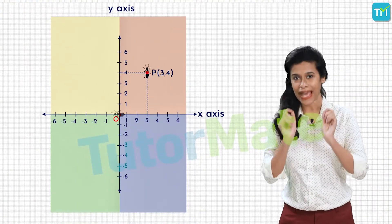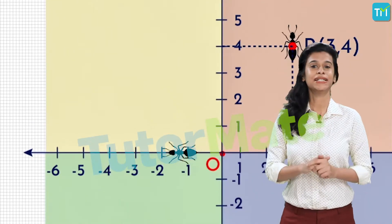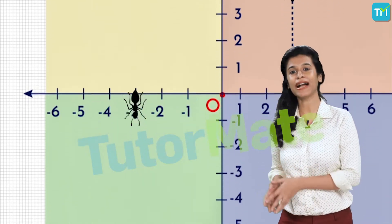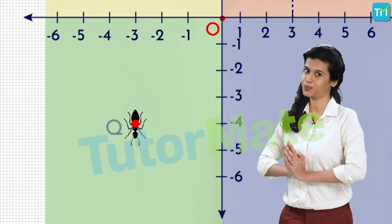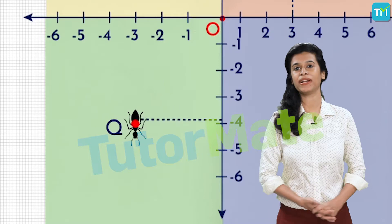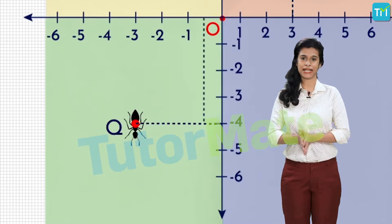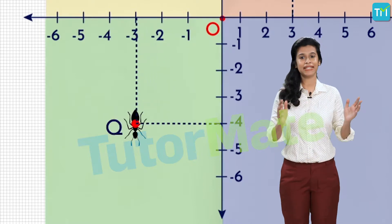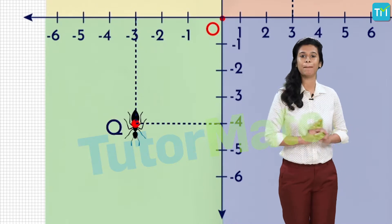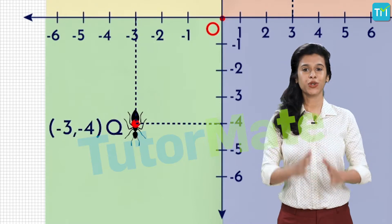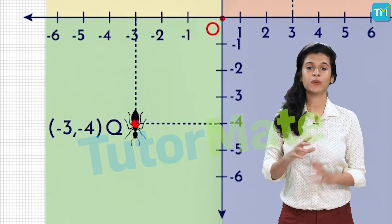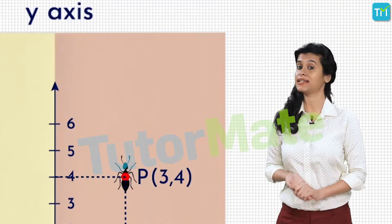Now let's say another ant starting from the origin walked three units towards the left on the x-axis, then walked down in the y-direction for four units to reach point Q. Since the ant walked on the left side of the origin, the x-coordinate of Q is minus 3. It also walked below the x-axis for four units, so the y-coordinate of Q is minus 4. Therefore, the coordinates of Q are (−3, −4), and Q lies in the third quadrant while P lies in the first quadrant.